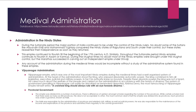Administration in the Hindu states: During the Sultanate period, the major portion of India continued to be under the control of Hindu rulers. Some sultans like Alauddin Khalji and Muhammad Tughluq conquered the Hindu states of Rajputana and the south, but these states reasserted their independence as soon as the sultans returned. The empire continued to flourish till the beginning of the 17th century AD.